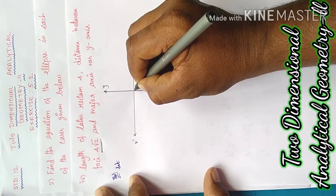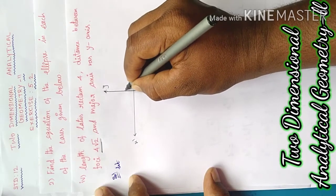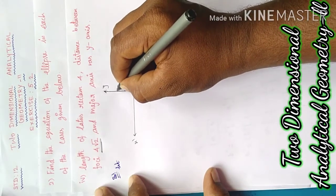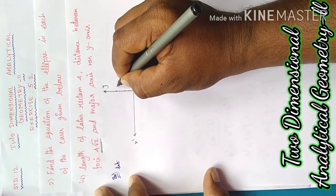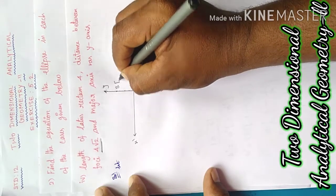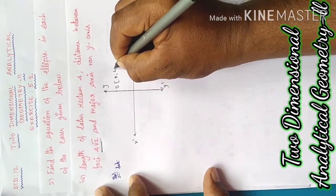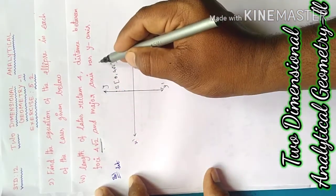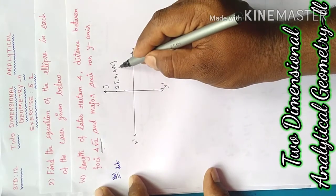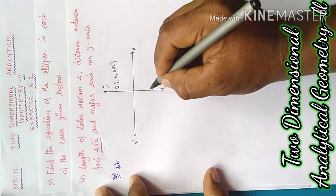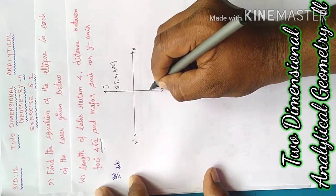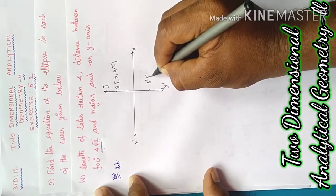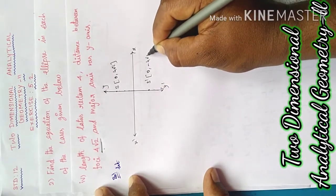Counting: 1 into root 2, 2 into root 2, 3 into root 2, 4 into root 2. The same distance on the other side gives S dash at 0, minus 4 root 2.